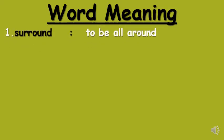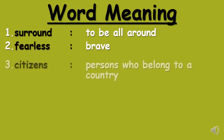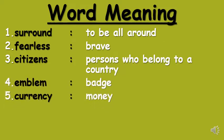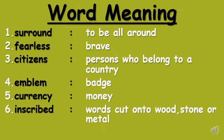Word meanings: surround means to be all around, things which are around you. Fearless means brave. Citizens are persons who belong to a country — like we are citizens of India. Emblem means badge. Currency means money. Inscribed means words cut onto wood, stone or metal. Composed means written.